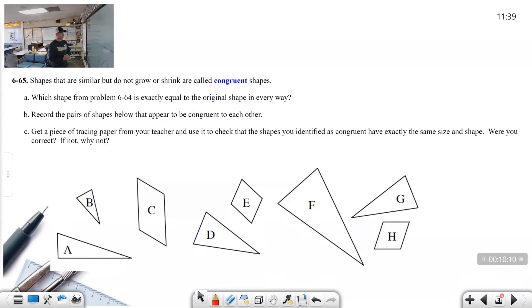Problem 65. Shapes that are similar but do not grow or shrink are called congruent shapes. I want you to write this down next to this problem. Shapes that are similar but do not grow or shrink are called congruent shapes. That means same shape, same size, identical in every way. We're going to use the word congruent from here on. So write that down, please.